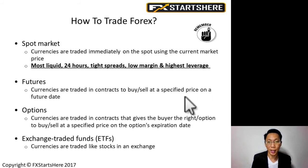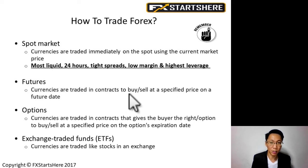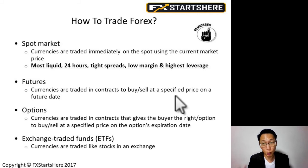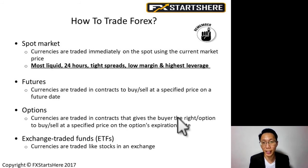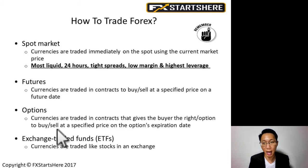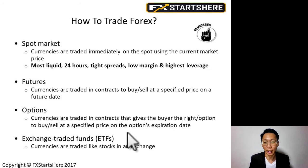The second way we can trade is through the futures market. Currencies are traded in contracts to buy or sell at a specific price at a future date. You can trade it through options — currencies are traded in contracts that gives the buyer the right or the option to buy or sell at a specific price on the options expiration date.